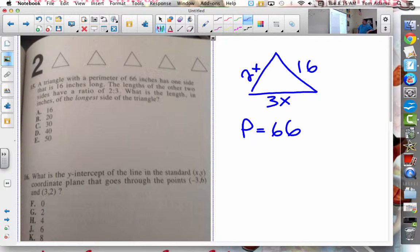So now what I could do is the perimeter is the length of all the sides added up. So if I say P is equal to 2x plus 3x plus 16, I could probably solve for x.